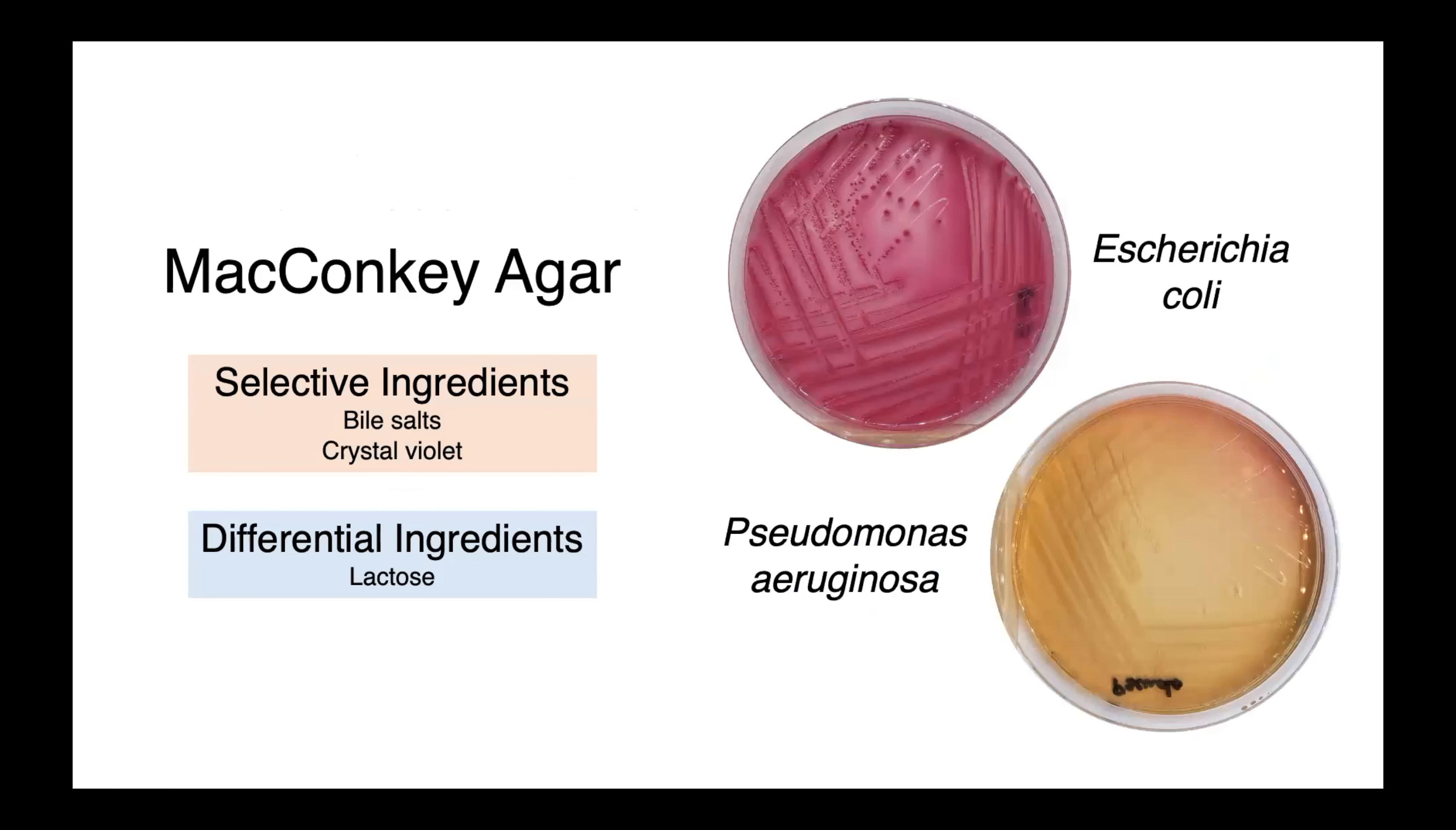One familiar example of a media that's both selective and differential is MacConkey agar. MacConkey contains bile salts and crystal violet, which are inhibitory towards gram positive bacteria, allowing the growth of only gram negative enterics. It contains a differential ingredient, lactose, which allows lactose fermenting bacteria to produce a pH change, resulting in bright pink colonies.